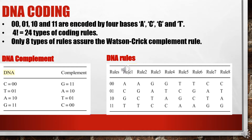We have the binary information 00, 01, 10, and 11, which will be encoded or mapped to the four bases A, C, G, and T. By doing so, we have four factorial combinations — that is 24 types of coding rules. We also have to keep in mind that A and T are complementary, and similarly C and G are complementary.